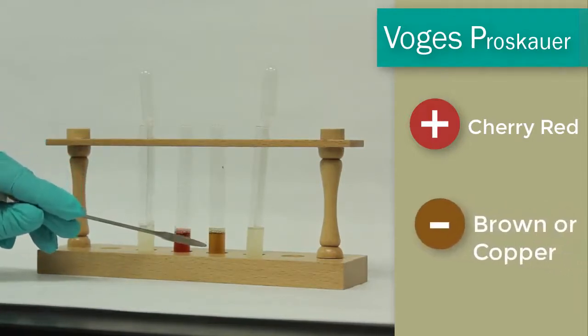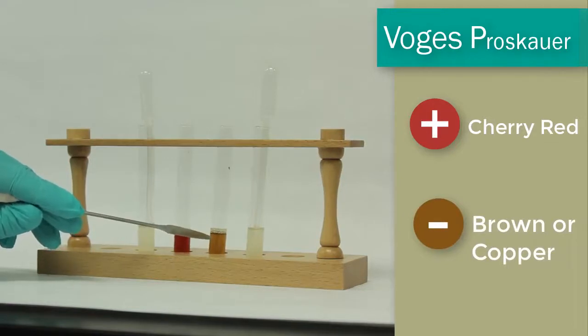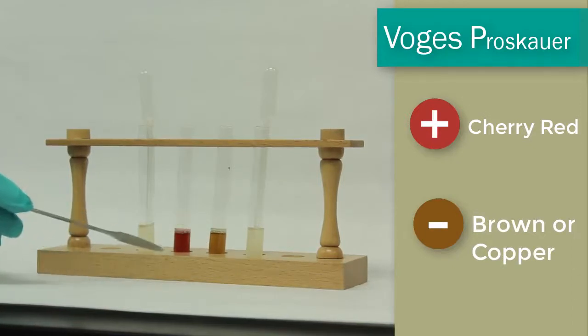The other tube notice is kind of a brownish color. Sometimes it can also be copper however it's not red. So the appearance that you see here would indicate a negative VP reaction. Thanks very much for watching.